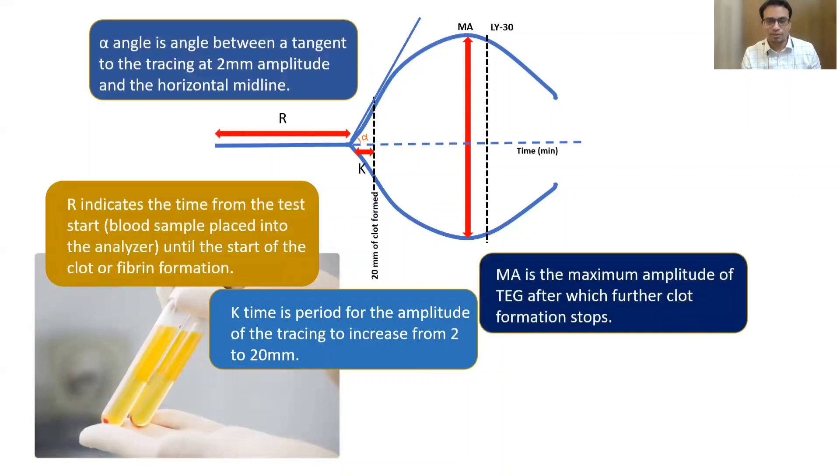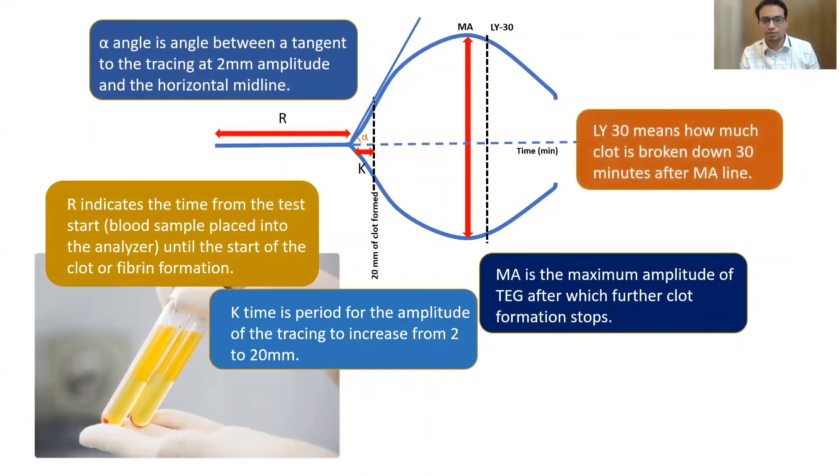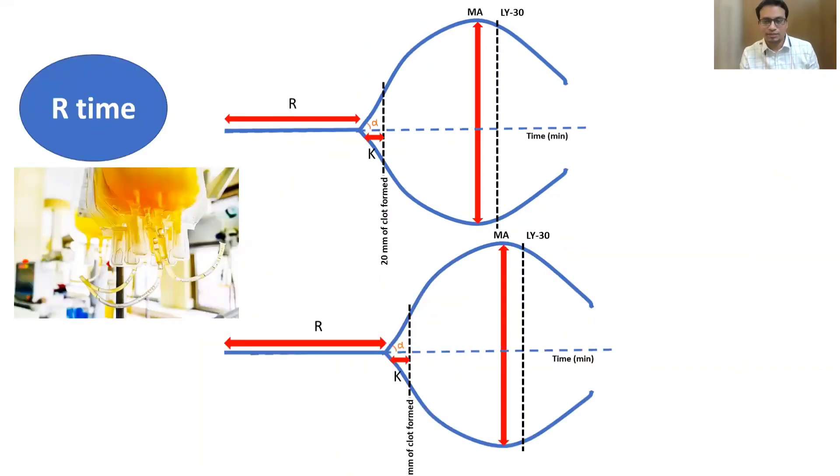Here two values are very important to remember: MA, the maximum amplitude of TEG, and LY30. LY30 means how much clot is broken down 30 minutes after MA line. The percentage, that is your LY30. LY30 is always in percentage, up to 10% is normal. Then comes LY60, that is 60 minutes after the MA line, how much clot is lysed. That is up to 15% is normal.